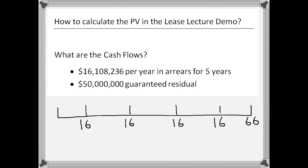The reason we do all of this is because of the information the question has provided us. The $16 million starts at the end of the first year because the payments are in arrears. We incorporate $50 million in the final payment because the $50 million is guaranteed — meaning the lessee has to make good at least $50 million at the end of the lease, whether by returning the asset or paying cash. If the residual is unguaranteed, the lessee doesn't have to pay that, and you would not include that amount as a cash flow.